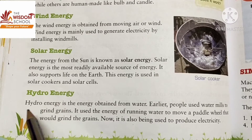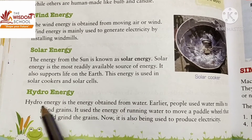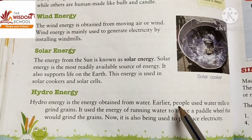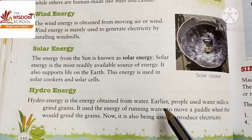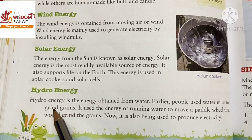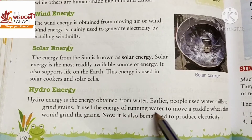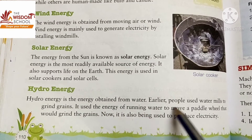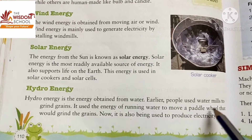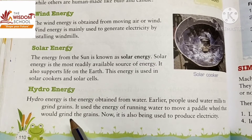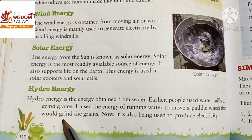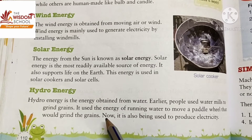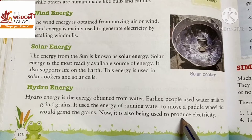Hydro energy is the energy obtained from water. Earlier, people used water mills to grind grains — it used the energy of running water to move a paddle wheel that would grind the grains. This process is now used to produce electricity.